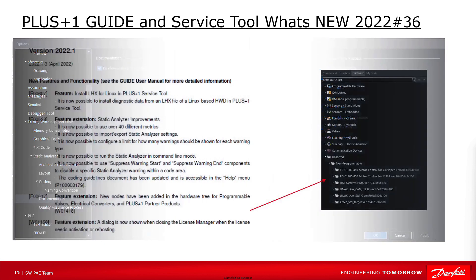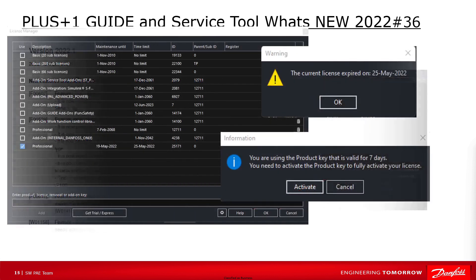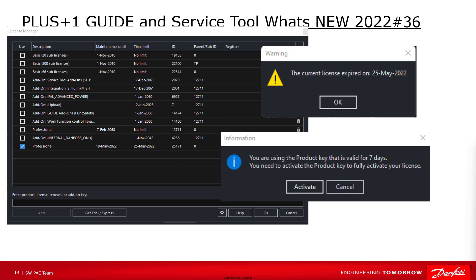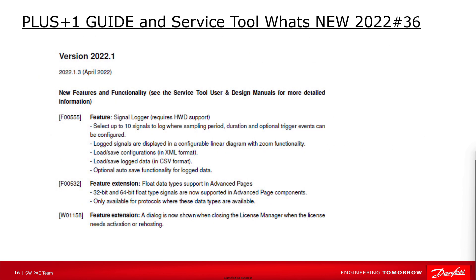New nodes have been added in the hardware tree for programmable valves, electric converters and Plus One partner products. The latest change in Plus One guide 2022.1 is a dialogue that appears when closing the license manager if the license needs to be activated or re-hosted. This is required because the selected license has expired or needs to be activated or re-hosted. This dialogue supports the user in the required licensing process.